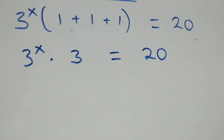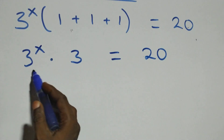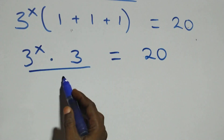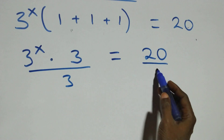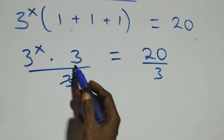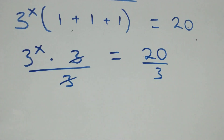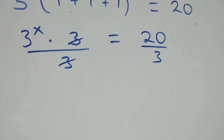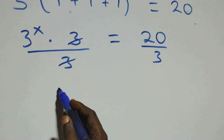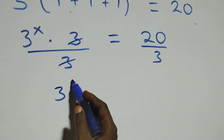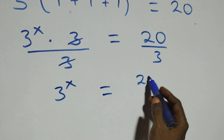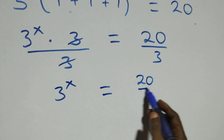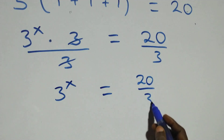The next step: we divide both sides by 3. That is, divide this side by 3 and also divide this side by 3. The 3s cancel each other, so we have 3 raised to power x equals 20 over 3.